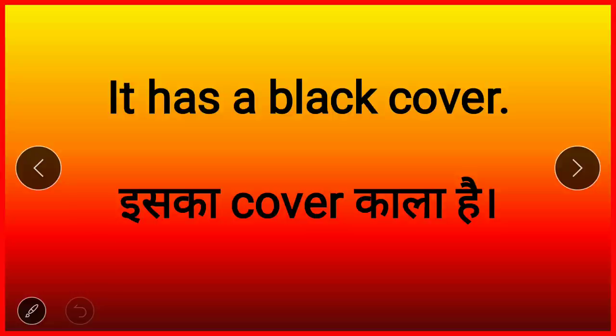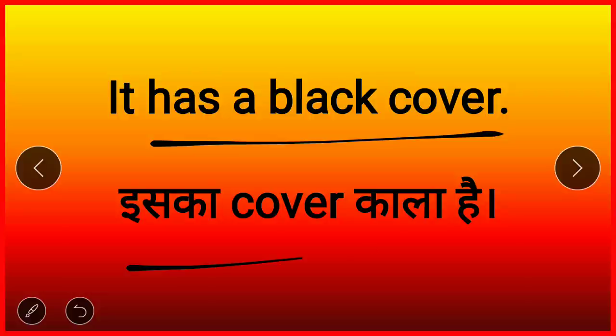Now with 'it' — for neuter gender, non-living things, animals. For example, talking about a book: the book's cover is black, so 'It has a black cover' — iska cover jo hai woh kala hai.